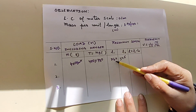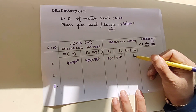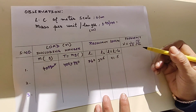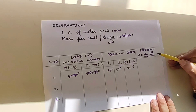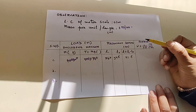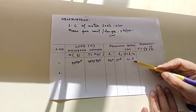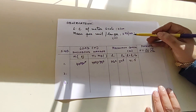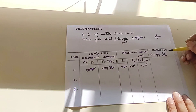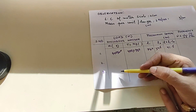Subtracting L2 from L1: 76.0 minus 34.5 gives the resonating length L = 41.5 centimeters. Substituting into the formula — with L in centimeters, tension T = 400 × 980 dynes, and mass per unit length m in grams per centimeter, all in CGS — you can calculate the frequency of the AC.